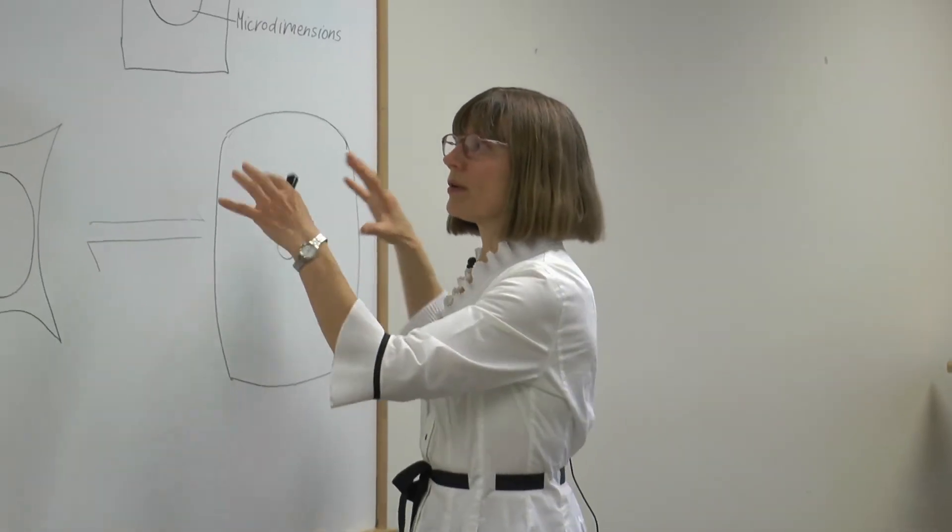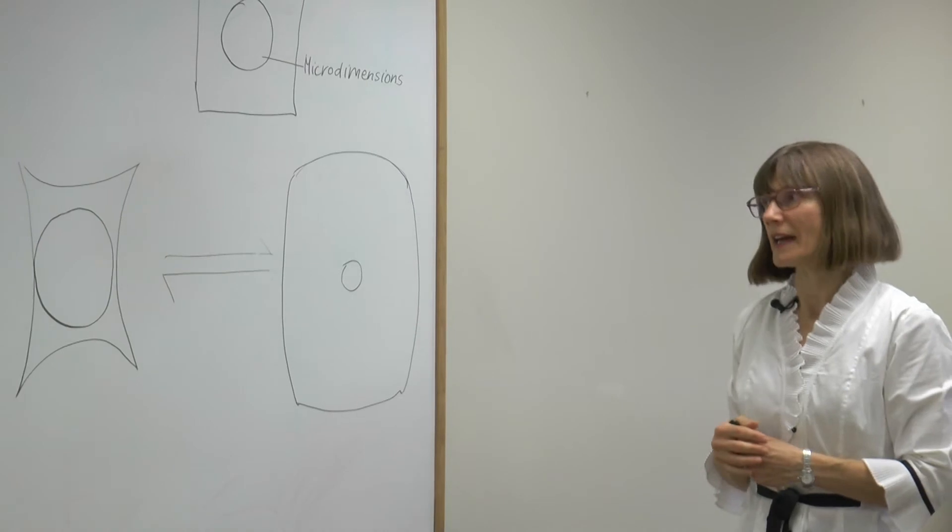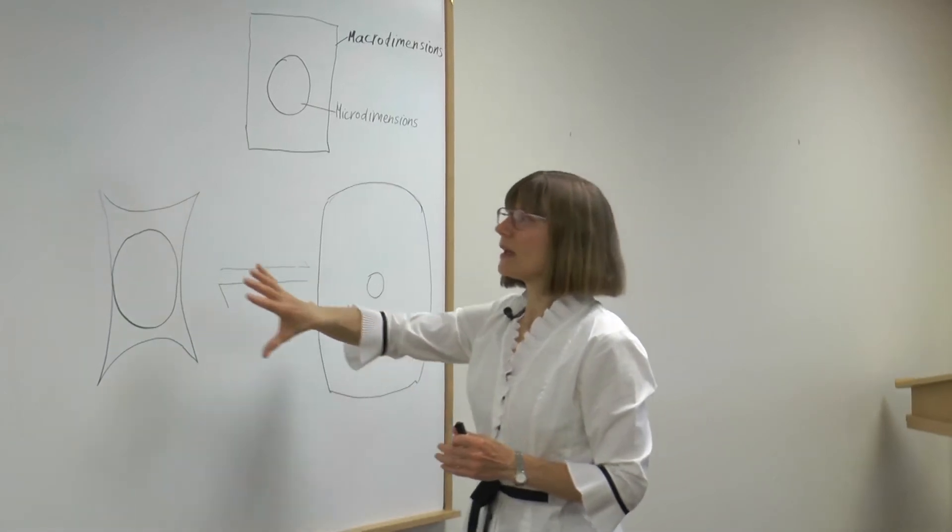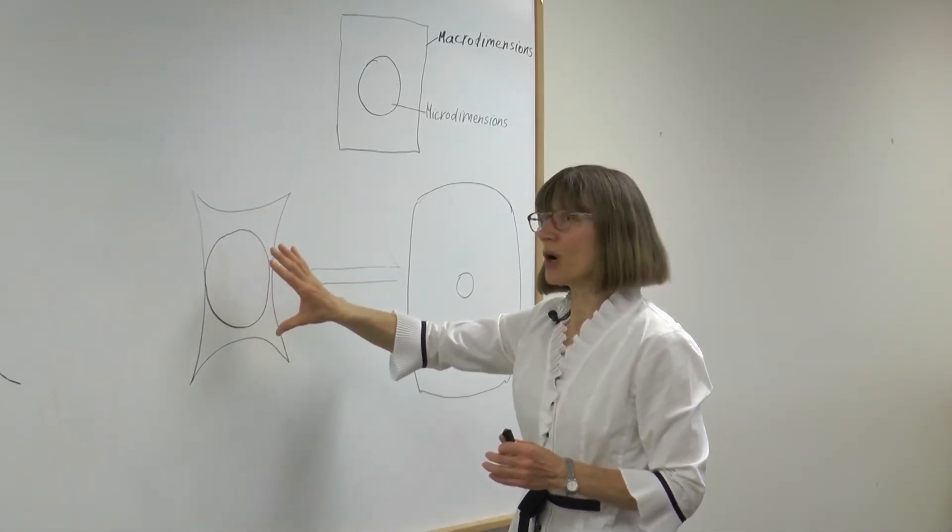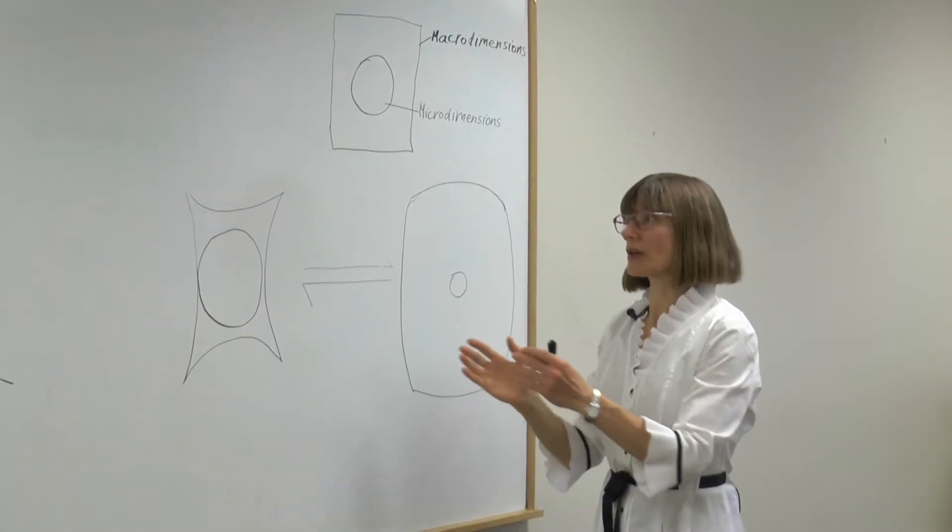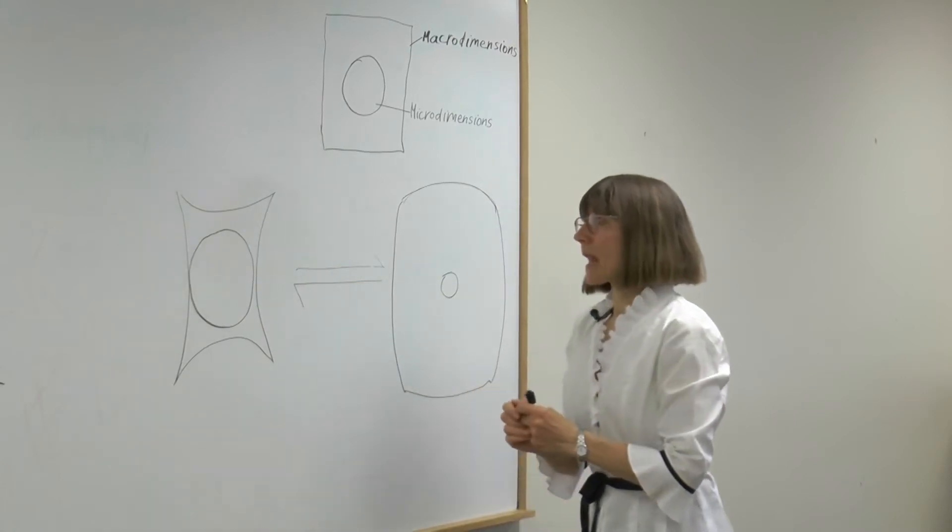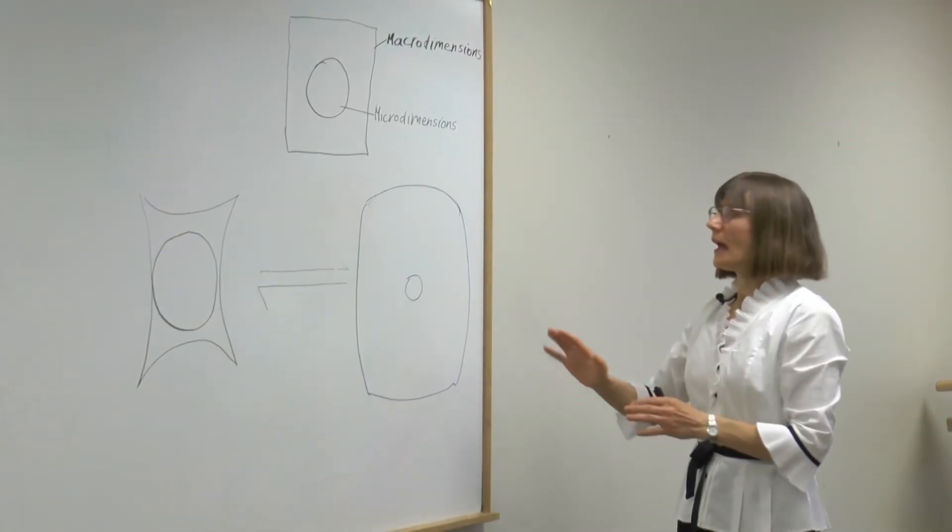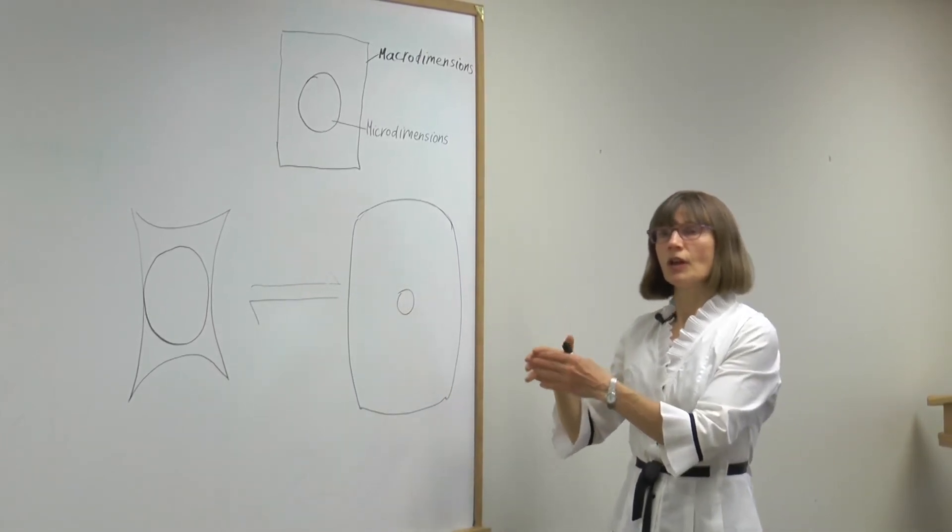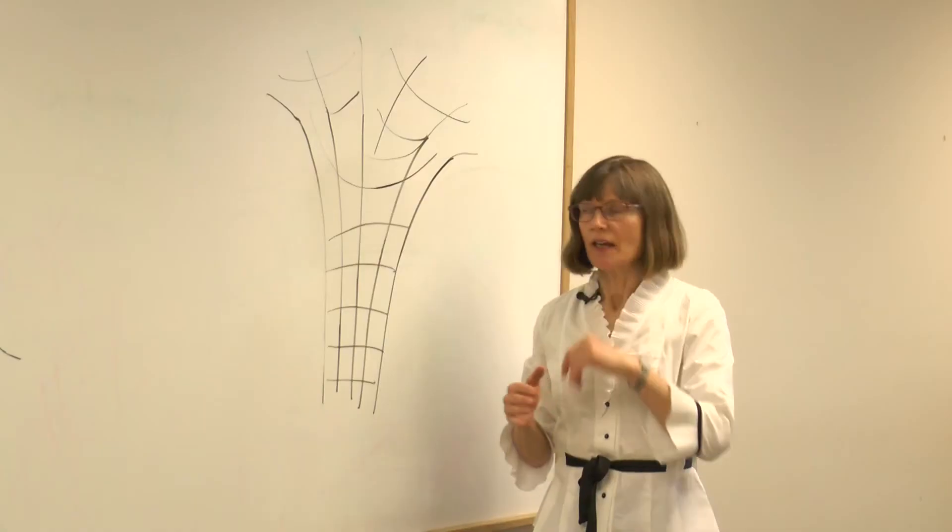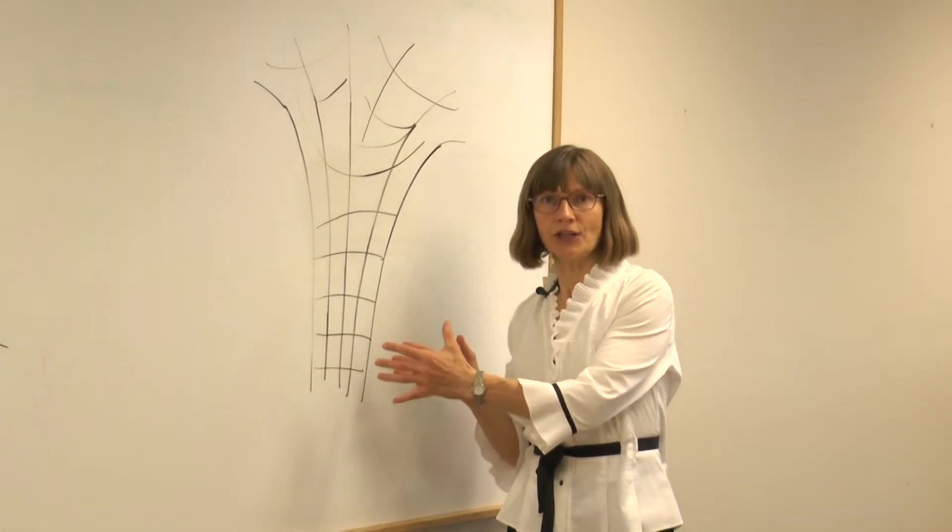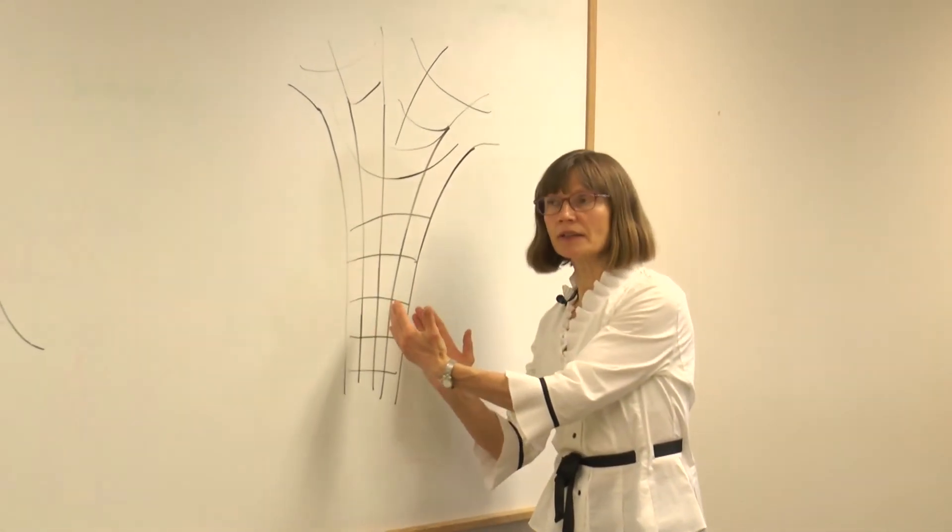However, if we made this on a larger scale, we would find that the macro dimension poor particles would shrink or contract together, and the particles that are enriched in macro dimensions would expand space. So in regions where the micro dimensions are enriched will shrink and compact.